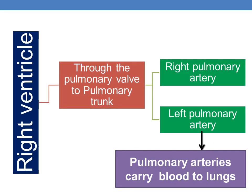So the overall picture is: the right ventricle pumps the blood through the pulmonary valve to the pulmonary trunk. This pulmonary trunk is divided into the right pulmonary artery and the left pulmonary artery, and these pulmonary arteries carry the blood to the lungs.